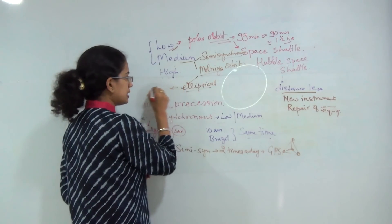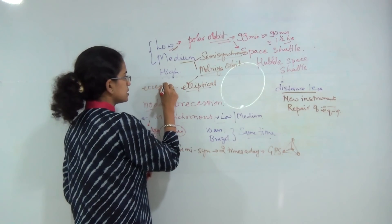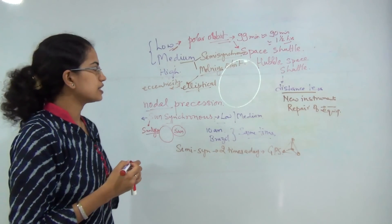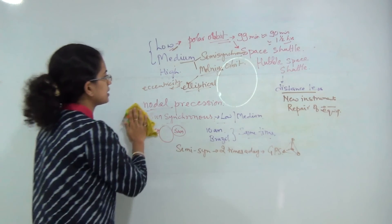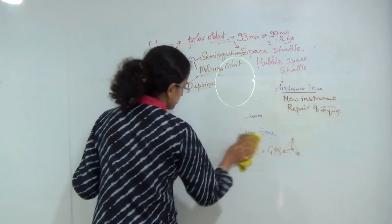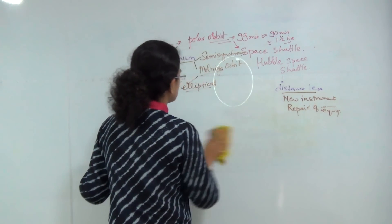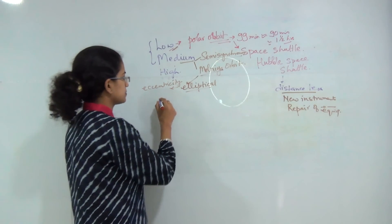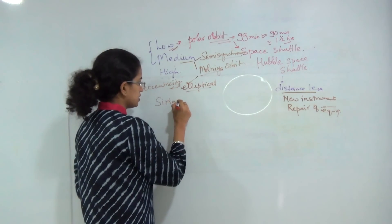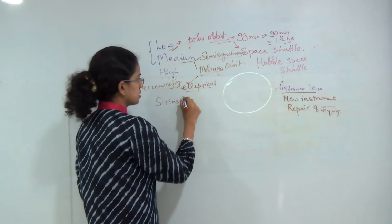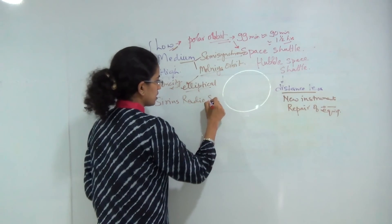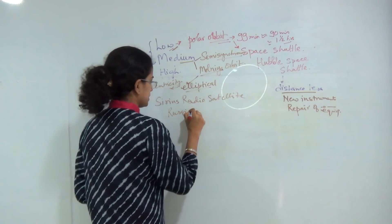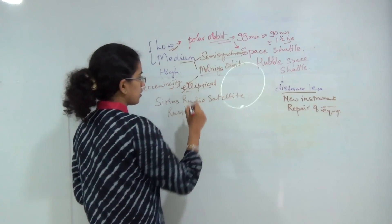The Molniya orbit is a type of elliptical orbit with high eccentricity, meaning it is not circular but has an elliptical motion. Examples of Molniya orbits include the Iris radio satellite and other Russian satellites placed into elliptical orbits.